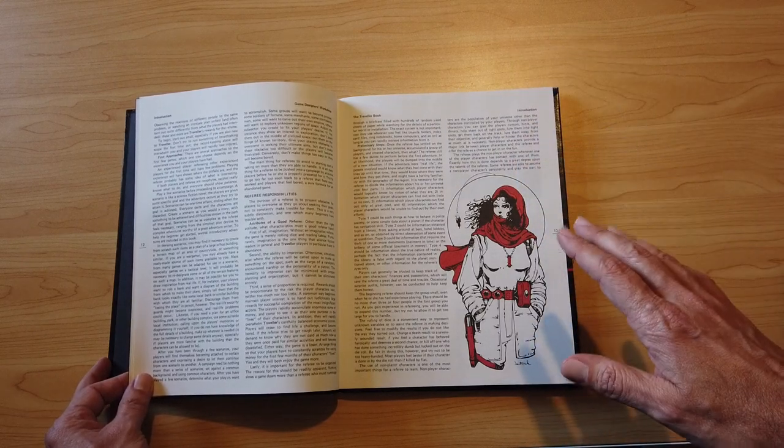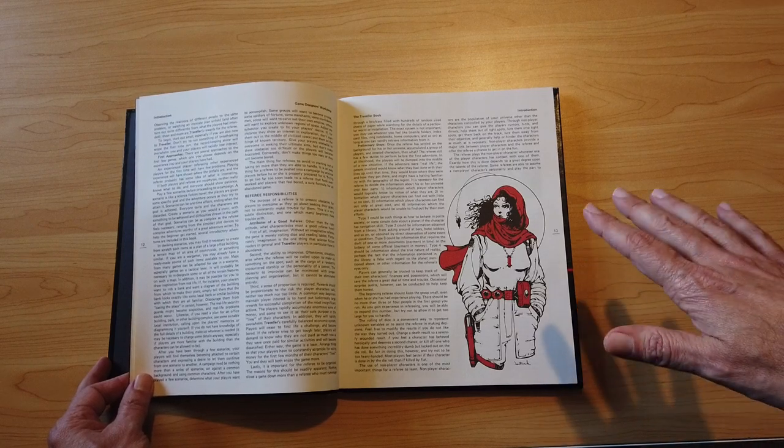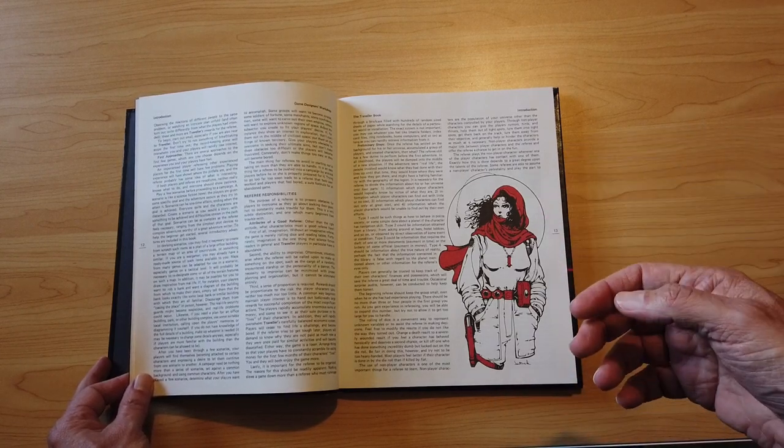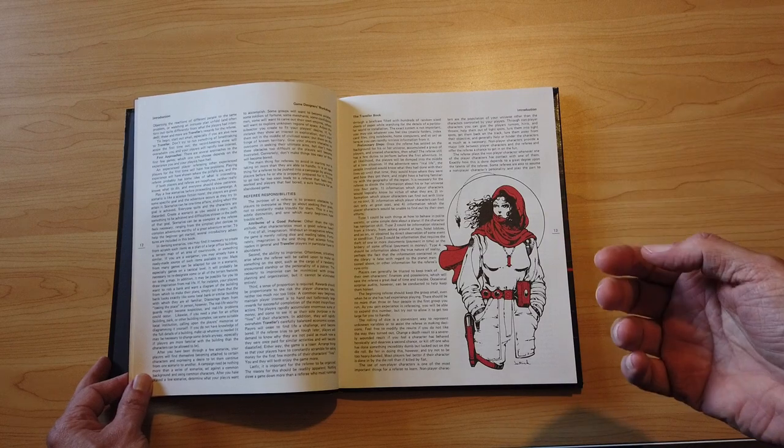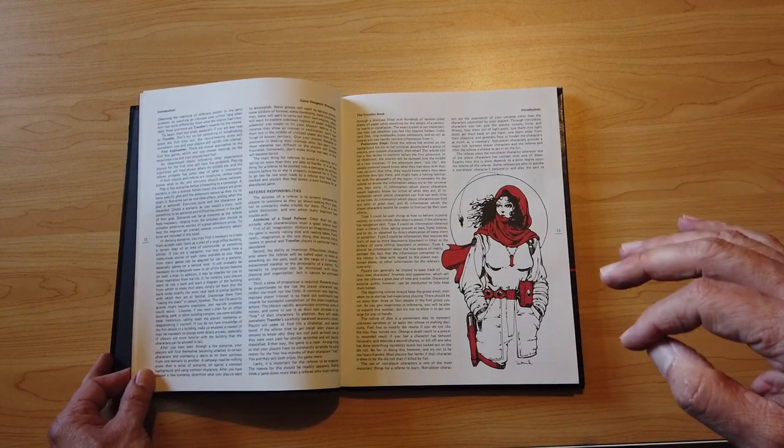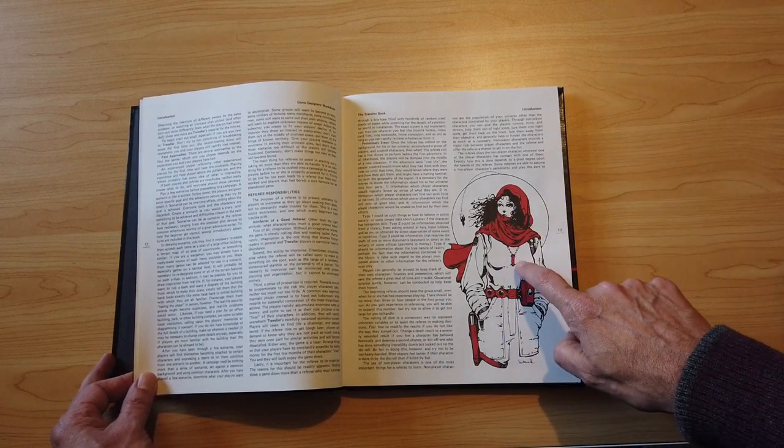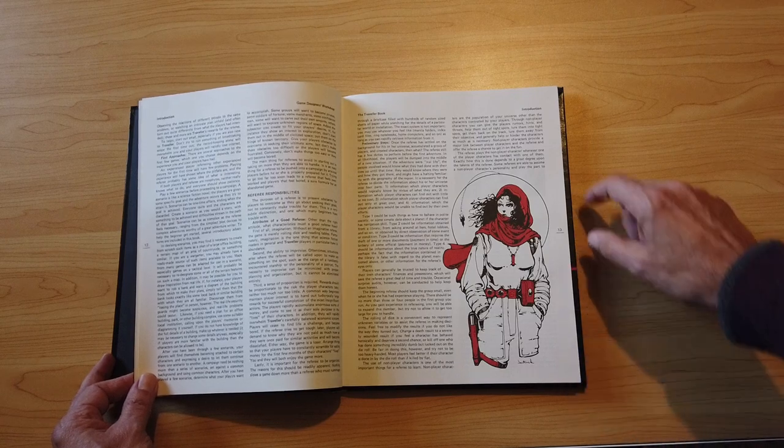Everything in Traveler is done with the roll of two six-sided dice that you add together. And usually, you try to roll more than a certain number. So if you're trying to shoot somebody in combat, use a skill, usually you want to roll over a certain number. Now I say usually, there are a few exceptions, which is one reason why this is a bit of a throwback to an older style of game design.